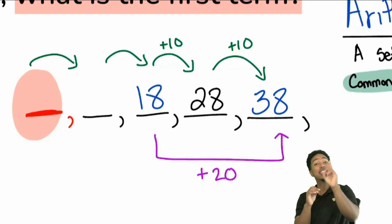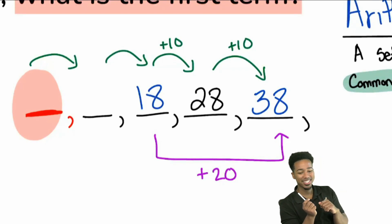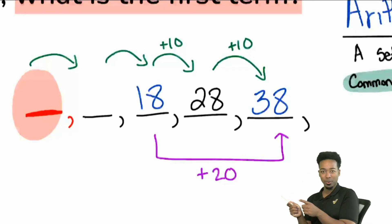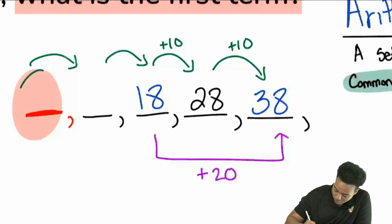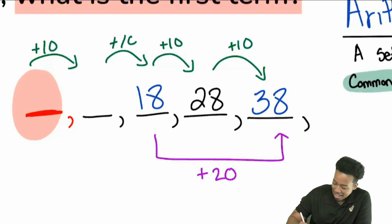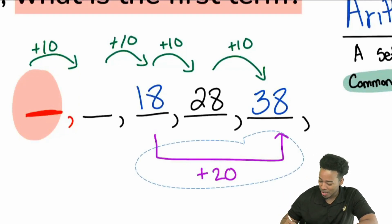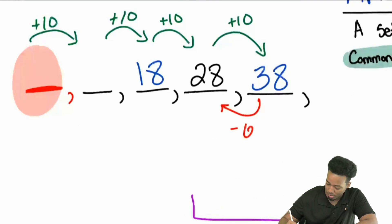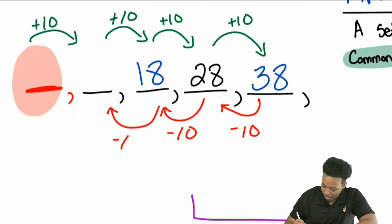Now we're not working forward in this problem — we are working backwards. To move forward we were adding 10 each time, but if we're working backwards we have to subtract 10. Subtract 10 going backwards, subtract 10 going backwards. That makes sense: 38, 28, 18.